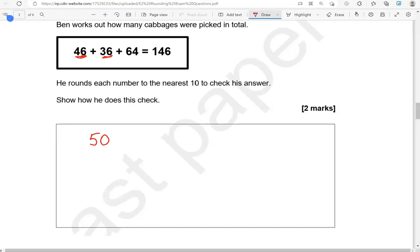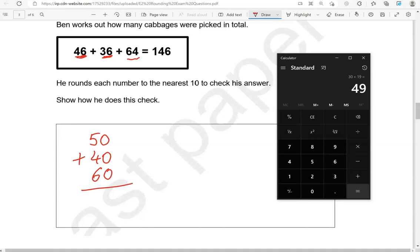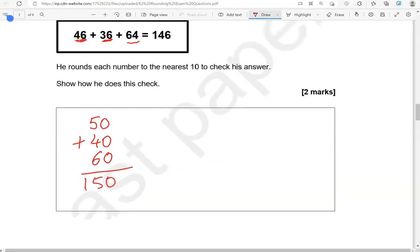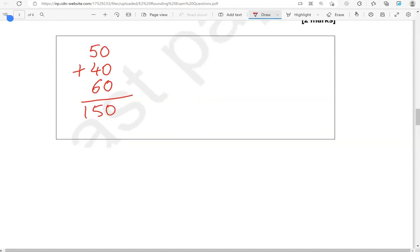36 is in between 30 and 40. Looking at the 6 to decide, it is closer to 40. So again, if it's 5, 6, 7, 8 or 9, we round up. We go to the higher number. 64 sits in between 60 and 70. This is 4, less than 5. So if it's 0, 1, 2, 3 and 4, we round down. So we're going to go to 60, not to 70. So adding all of these together: 50 add 40 add 60 gives us 150. And that is close to 146. So that shows that he's done the calculation correctly.